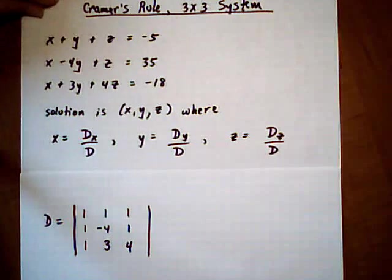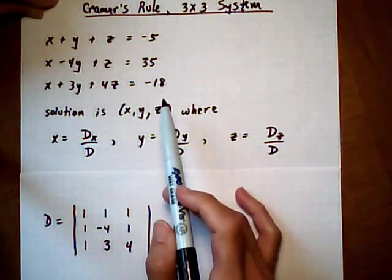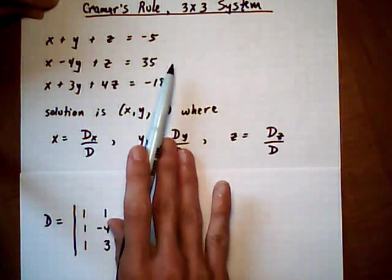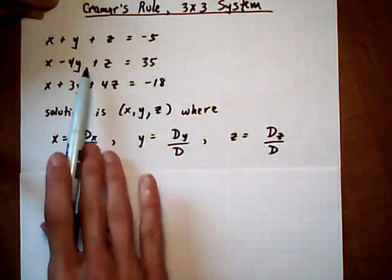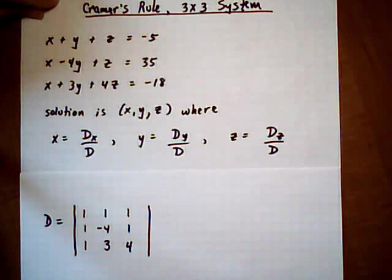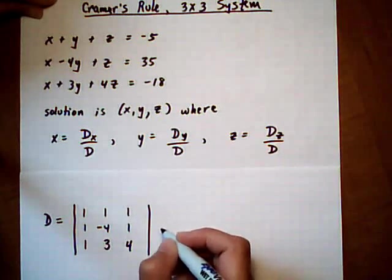So it's important when you get a system of linear equations that you put it into this format here where you have the x, the y, the z, and then equals the constants. If you have any missing pieces in here, then the coefficient of the missing piece would be a 0.